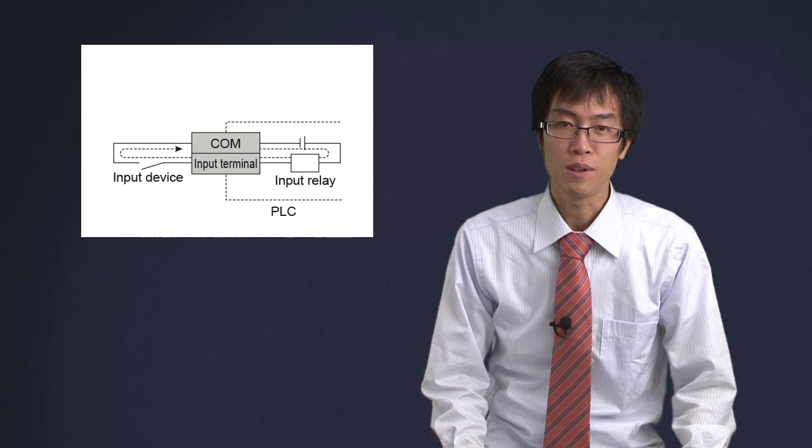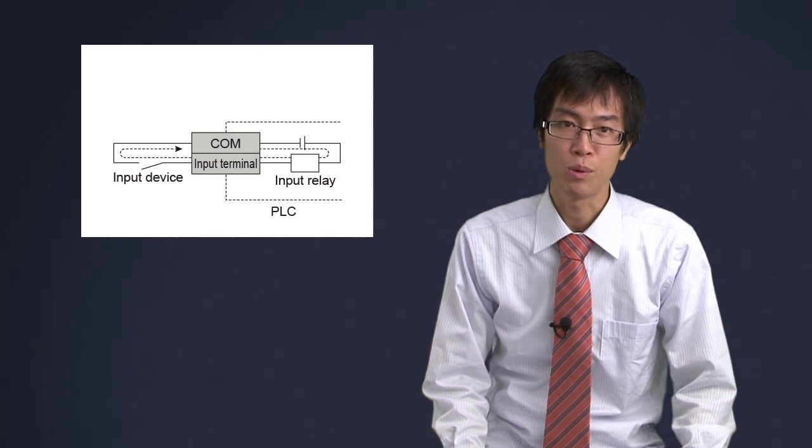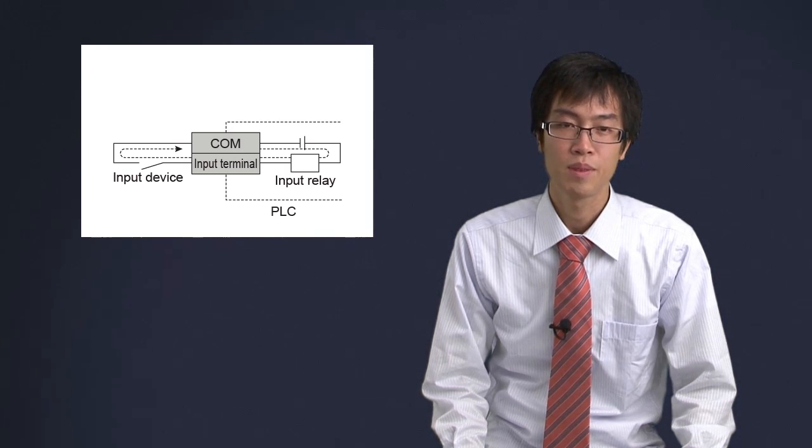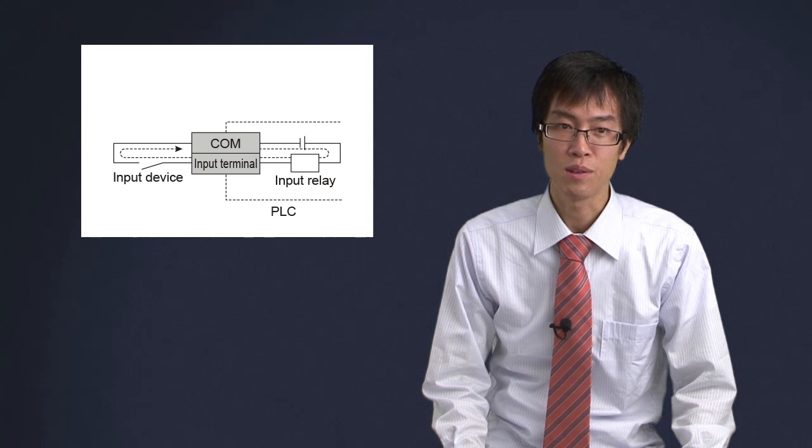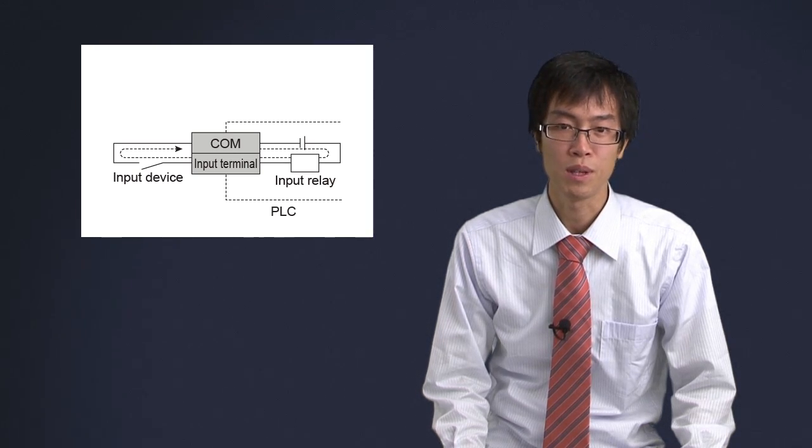An input device works when it is connected between an input terminal and its COM terminal. When the input device outputs a signal, an internal input relay transfers the signal into the PLC.